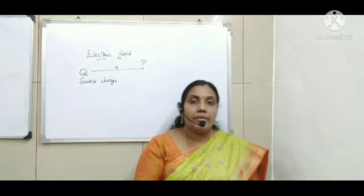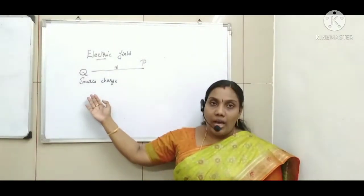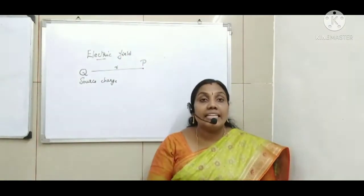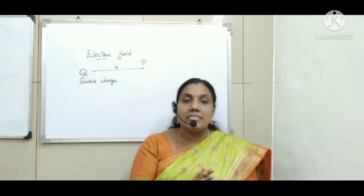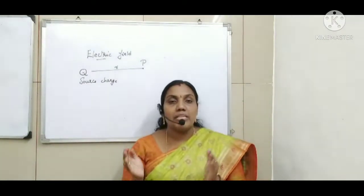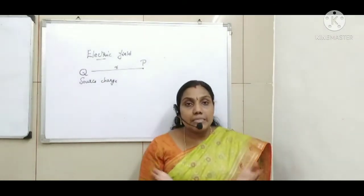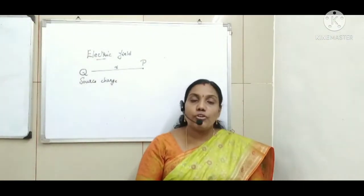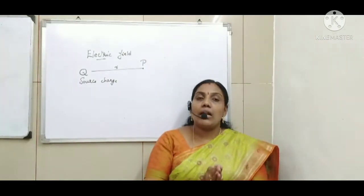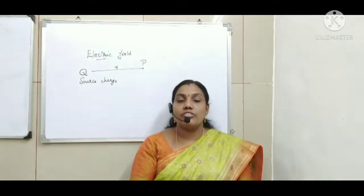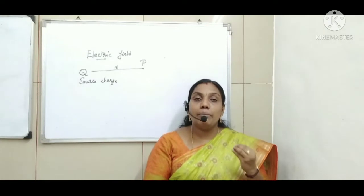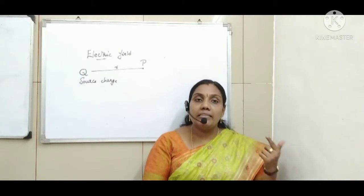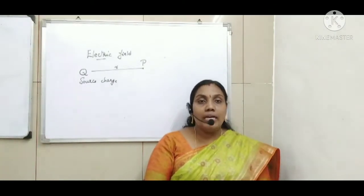Now, what is this electric field? Consider a charge called a source charge Q. Around the source charge there is an electric field — that is, any charge placed in free space, vacuum, or any other medium has a space around it where another charge may experience an electrostatic force of attraction or repulsion. This electrical environment around the charge is called the electric field. So, electric field is a region around the charge where another charge experiences a force of attraction or repulsion.